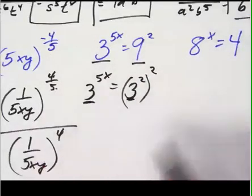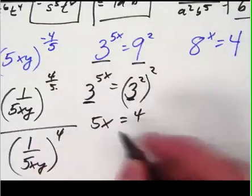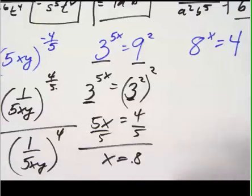Well then if I now have a one to one match, which is great, then I can just simply say five x equals two times two, which is four. Divide both sides by five and x equals four fifths or point eight either way.